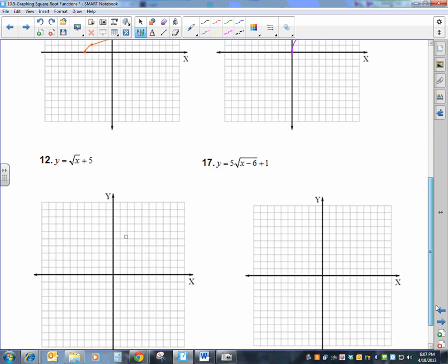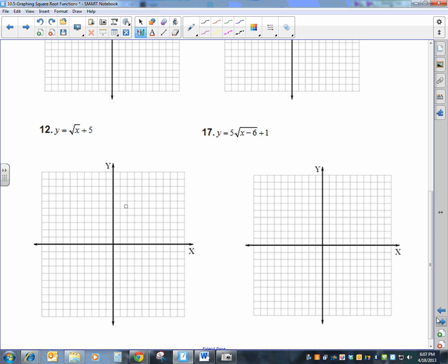Number 12 says y equals the square root of x plus 5. So we like to decide what is that 5. Is it a, h, or k? It is not underneath the radical, so it's not h. It's not multiplying by the radical, so it's not a. Therefore, it's k. And h is 0. So k is 5. That's my starting point. A is equal to 1.